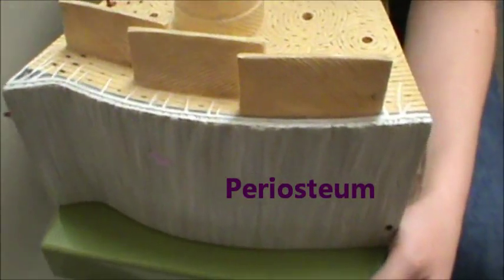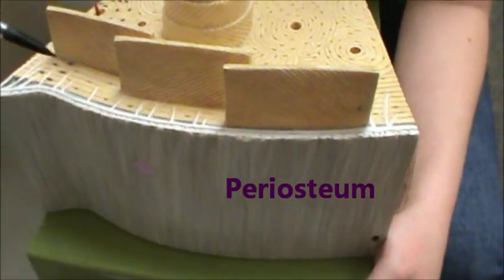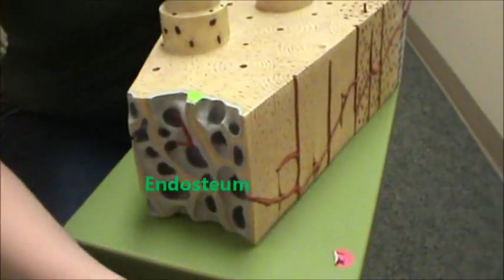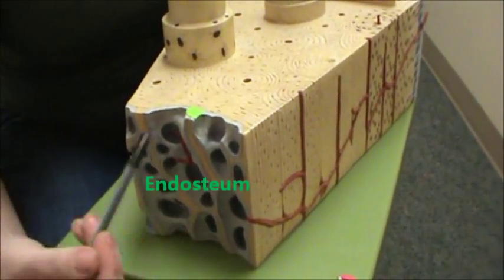And then when we turn this model you can see the periosteum on this side, and the other side has the endosteum which is spongy-like. Thank you so much.